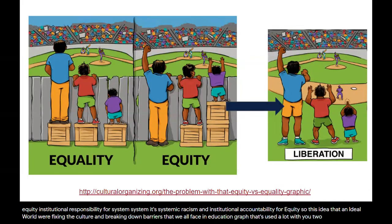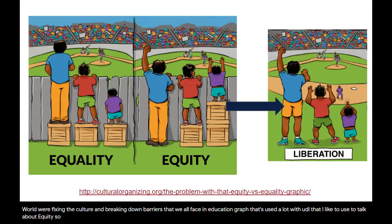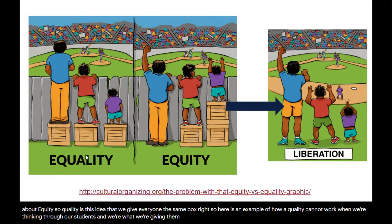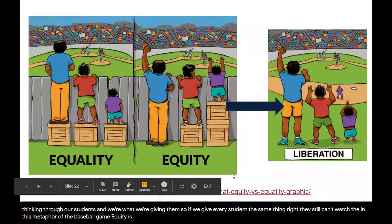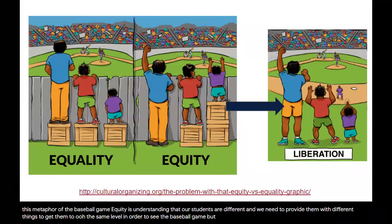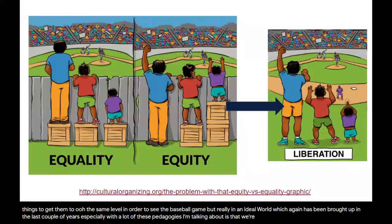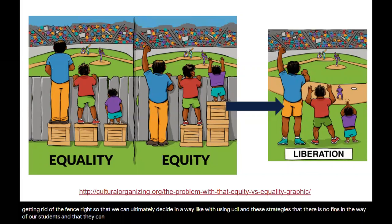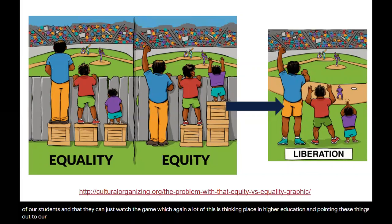Here's another graph used often with UDL to talk about equity. Equality is the idea that we give everyone the same box — but that doesn't work when students start from different places. In the baseball game metaphor, giving every student the same box still means some can't see the game. Equity means understanding students are different and providing them with what they need to reach the same level. But in an ideal world, we're striving toward liberation — getting rid of the fence entirely — so that we can design in a way where there is no barrier in front of our students.